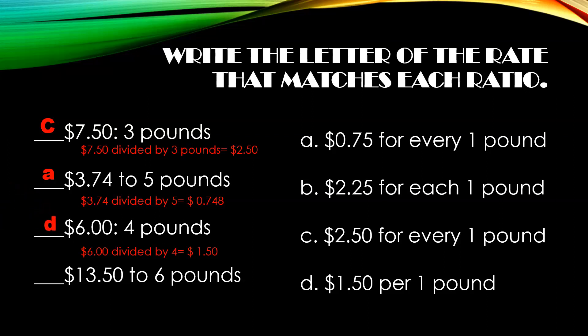Using the information that I have, I can estimate that B is going to be my correct answer for the last one. If we check it, $13.50 divided by six is $2.25. So B — $2.25 for each one pound.